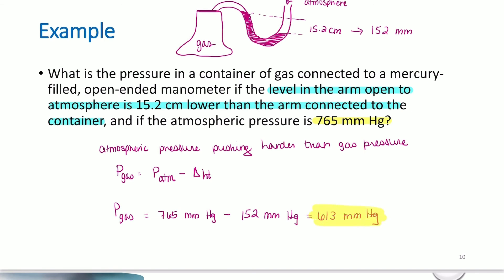It gives me an answer of 613 millimeters of mercury. So what this means, because the arm open to atmosphere is 15.2 centimeters lower than the arm open to the gas, that means the atmosphere is pressing harder on the mercury inside the U-shaped tube, inside the manometer, than the gas pressure is. Therefore, atmospheric pressure is higher by 152 millimeters of mercury. Therefore, I can find the pressure of my gas and it's 613 millimeters of mercury.